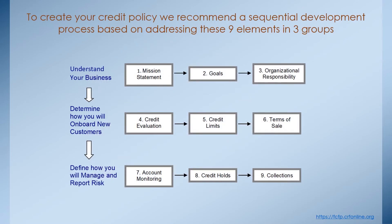To create your credit policy, we recommend that you follow a sequential development process based on addressing these nine elements in three major groups. The three major groups are: understand your business, determine how you will onboard new customers, and define how you will manage and report risk.